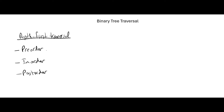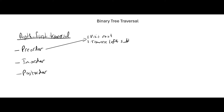What are the steps for pre-order traversal? It is visiting the root first, then traverse the left subtree, and the last one is traverse the right subtree.